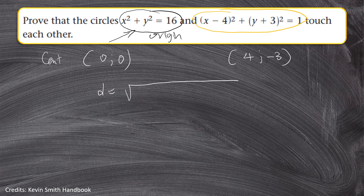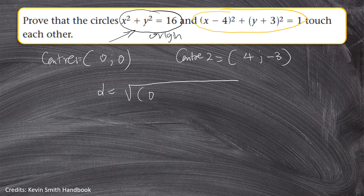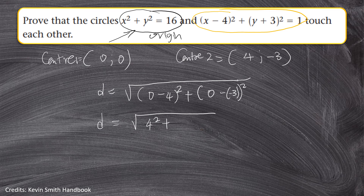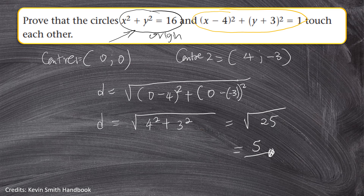We can now use the distance formula to calculate the distance between the centers. Call them center one (0, 0) and center two (4, −3). Applying the distance formula: d = √[(0 − 4)² + (0 − (−3))²] = √[4² + 3²] = √[16 + 9] = √25. The distance is equal to 5 units.